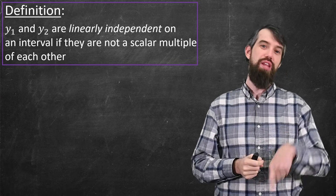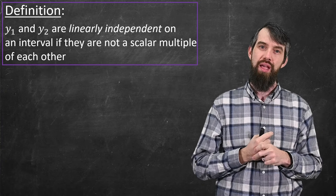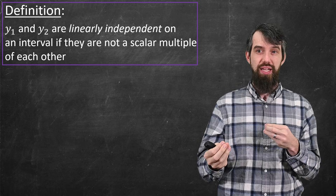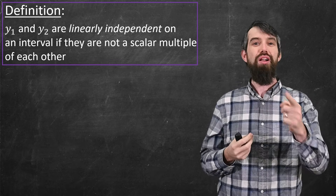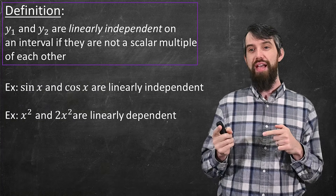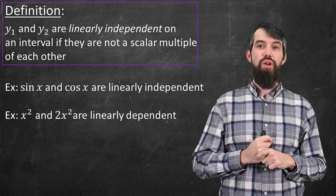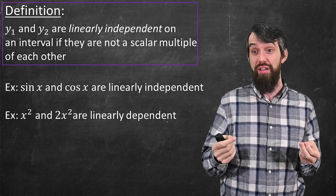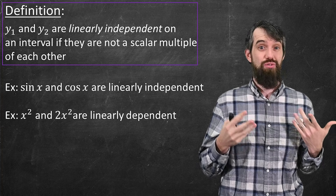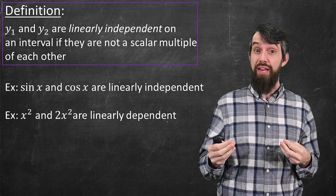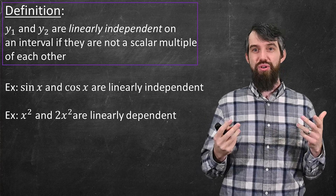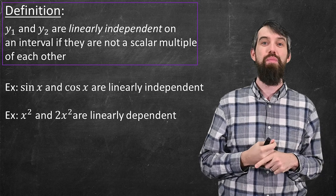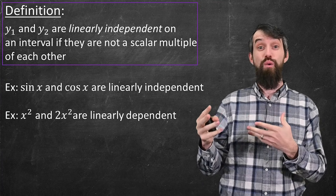We want to specify certain types of y1 and y2 using the notion of linear independence. Two solutions y1 and y2 are linearly independent if one is not just a scalar multiple of the other. For example, sine of x and cosine of x are linearly independent — they're not one being three times the other on an entire interval. In contrast, x² and 2x² are dependent because one is just twice the other. This is analogous to linear independence of vectors in linear algebra.